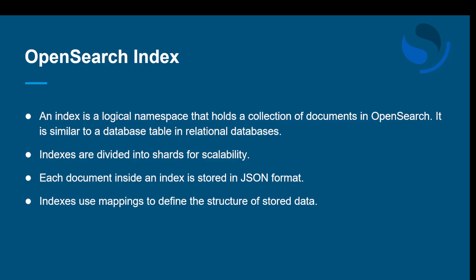An OpenSearch index is a logical namespace that holds a collection of documents. It is similar to a database in relational databases. For example, if you're managing a digital library catalog, you can create an index called 'books' where each document represents a book with details like title, author, and publication. This setup allows you to easily search the data. Index helps you to search the data in the same pattern.